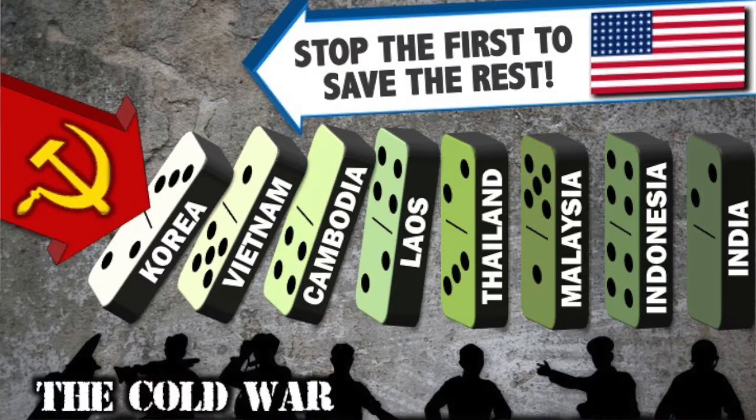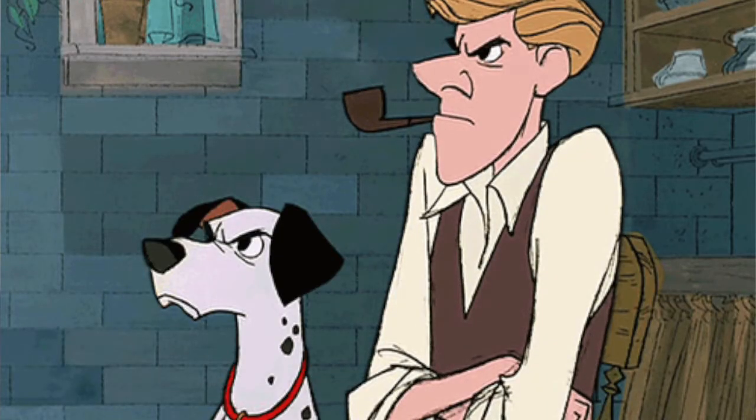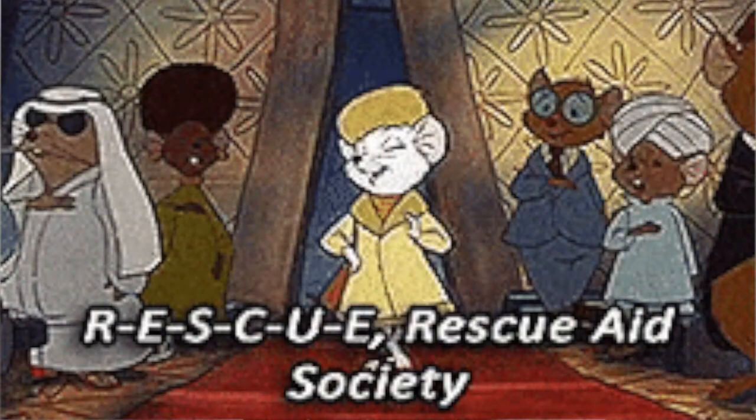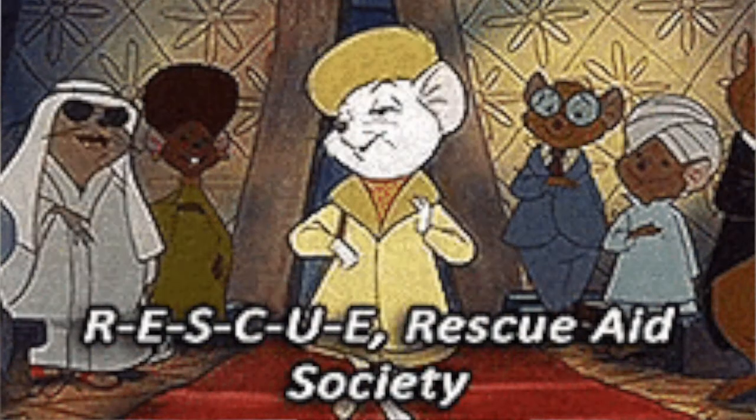The domino theory held that a victory by North Korea might lead to further communist expansion — first into South Korea, then into Vietnam, then into Bangladesh, then into Indonesia, Malaysia, and Singapore. The newly formed United Nations did not want that to happen. So they denounced North Korea's actions and called upon UN members to help South Korea defeat the invading forces. President Truman ordered US military forces into South Korea.